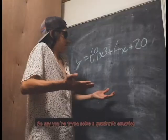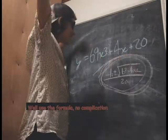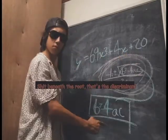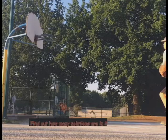So say we're trying to solve a quadratic equation. We'll use the formula, no complication. Shit beneath the root, that's the discriminant. Find out how many solutions are in it.